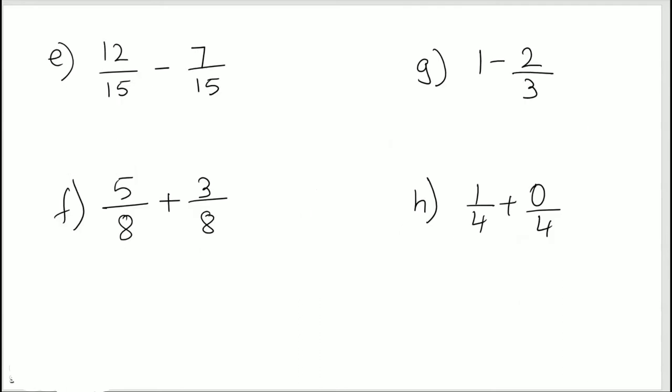Next question. 12 over 15 minus 7 over 15. Same denominator. So subtract the numerators. 12 minus 7 is 5, so 5 over 15. Now 5 and 15 do have common factors, so we need to simplify this. 5 1s are 5, 5 3s are 15. So the solution is 1 by 3.